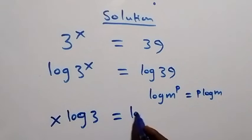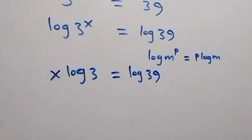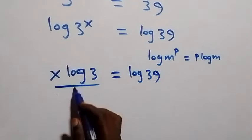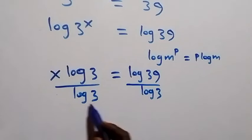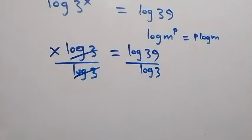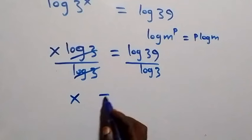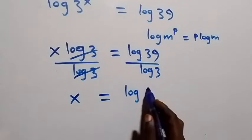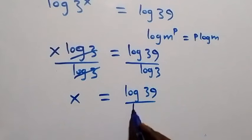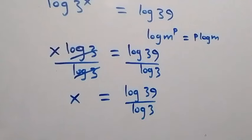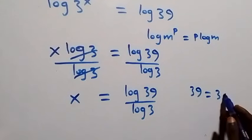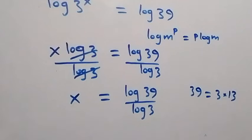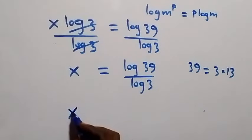Then equals to log thirty-nine. Next step, let's divide both sides by log three. So log three will cancel each other, and we are left with x which is equal to log thirty-nine over log three. Also from here, thirty-nine can be written as three times thirteen.